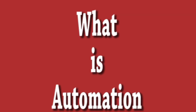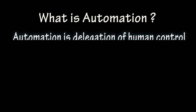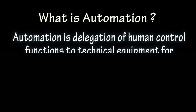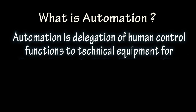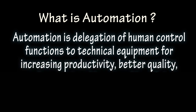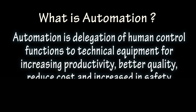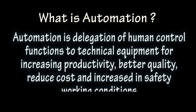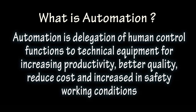What is automation? Automation is the delegation of human control functions to technical equipment for increasing productivity, better quality, reduced cost, and increased safety in working conditions.